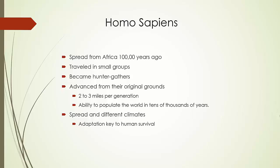They spread about two to three miles per generation, meaning they didn't really go far from where they originally came from, but they were able to populate the entire world within tens of thousands of years. Traveling away from Africa, they spread to different climates, so adaptation was key to human survival. They had to adapt to their new environments.